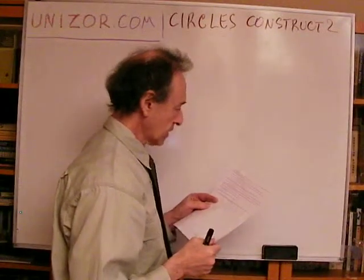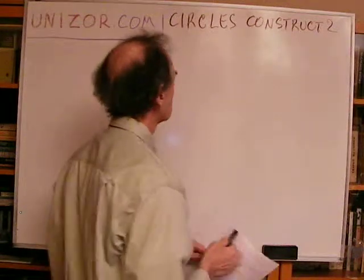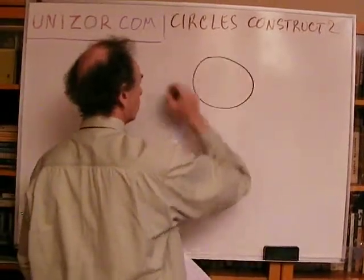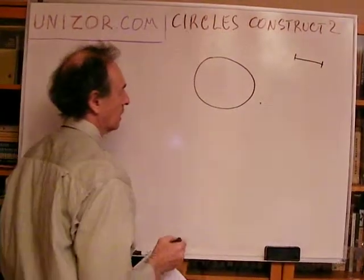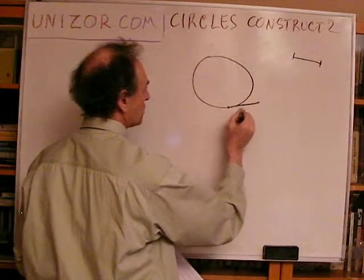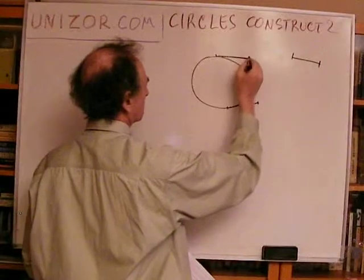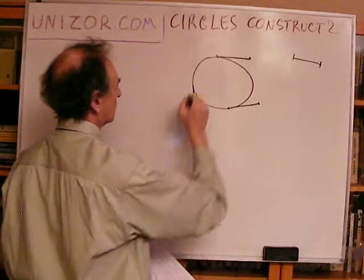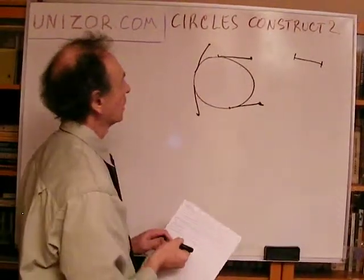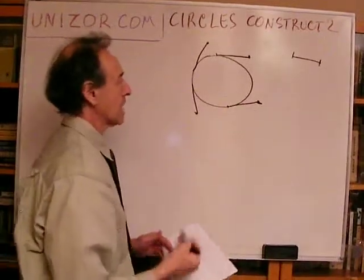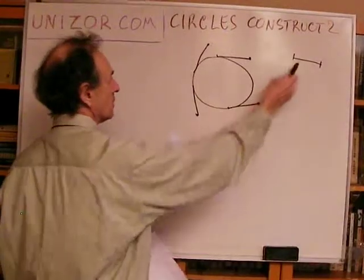Find a locus of points outside of a given circle such that their tangential segments to this circle are congruent to a given segment. So you have a circle and you have a certain segment. You are looking for points outside such that their tangential segment will be exactly congruent to this one. All these points belong to this particular locus - what exactly do they represent? What's the set of points all having the same property that their tangential segment to this given circle is congruent to a given segment?